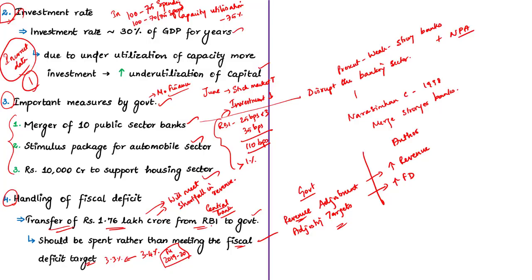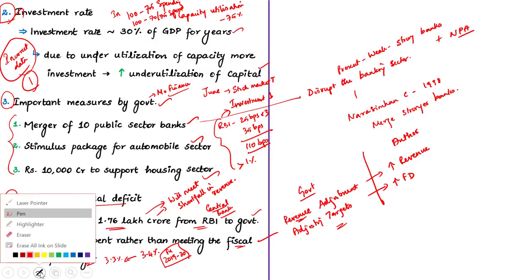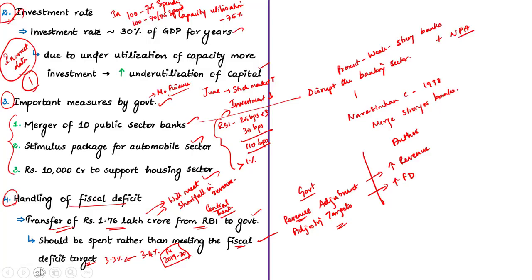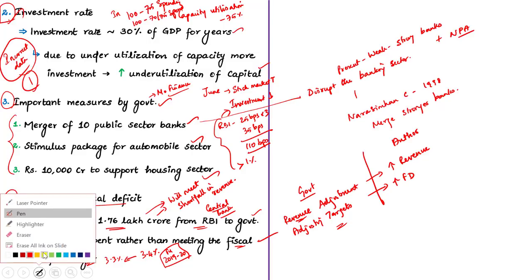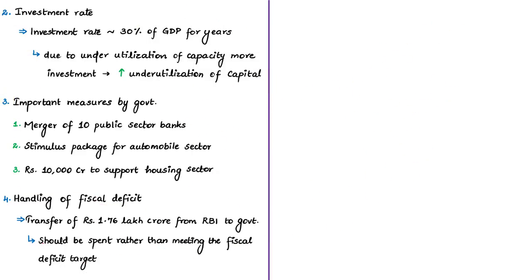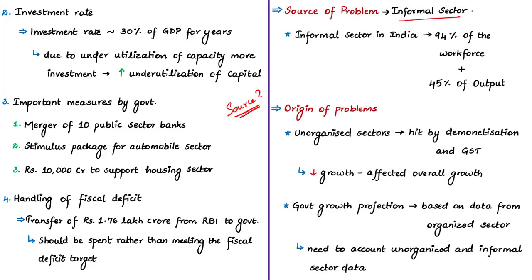Four things were discussed: first, incorrect data shared by the government used by world financial institutions; second, stagnation or decline in investment rates; third, announcements by the Ministry of Finance; and fourth, the RBI-to-government money transfer, with the author noting the government is trying to meet the fiscal deficit target instead of spending the money. All these actions do not solve the source of the problem. The source of the problem is the unorganized sector.